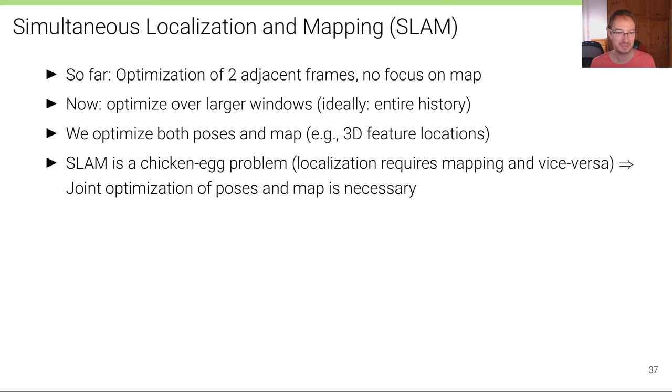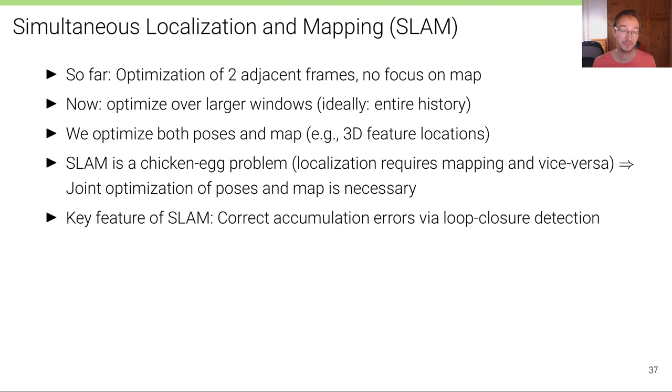It's important to note that SLAM is a chicken and egg problem. Accurate localization requires accurate mapping and vice versa. And therefore, joint optimization of the poses and the map is necessary. Another key feature of SLAM, apart from optimizing over much larger windows, is to be able to correct accumulation errors via so-called loop closure detection. And therefore, the resulting map becomes more globally consistent and can be used for localization purposes.